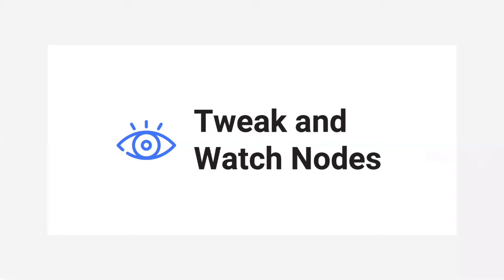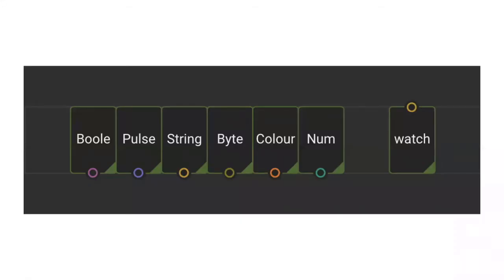Now, some useful ZOD nodes. The first ones are tweak and watch nodes, which are some of the most useful nodes in ZOD. What they do is let us edit and watch what's going on in our program in real time. Last time, every time we wanted to change something, we had to change it and then upload the program again. Tweak and watch nodes let us cut out that step - we can upload once and then change things without uploading again. On the left are tweak nodes; on the right we have a watch node, which we connect to output pins to see what's happening.